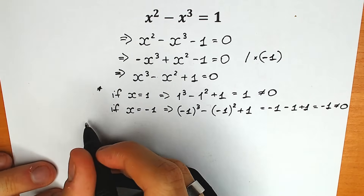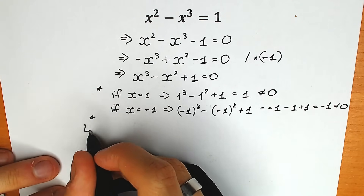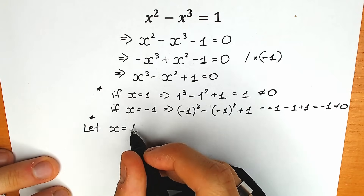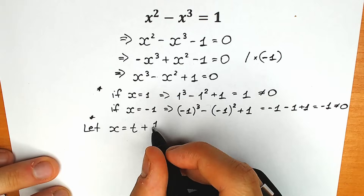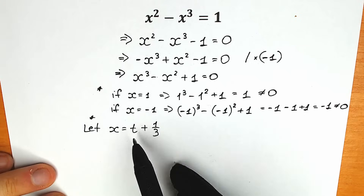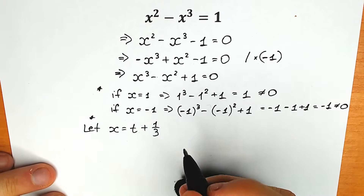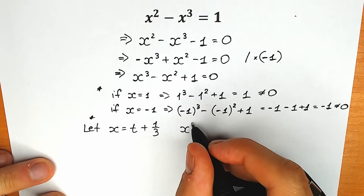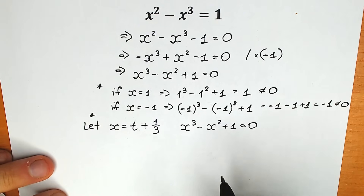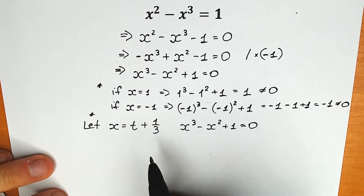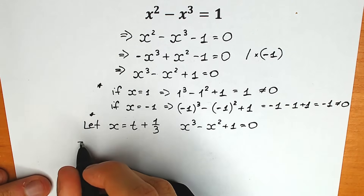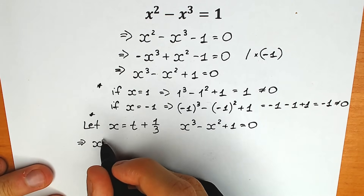I'm going to use a substitution. This is our second step. Let our substitution be x equal to t plus 1 third. Let's plug in t plus 1 third into our equation x cubed minus x squared plus 1 equal to 0. We can quickly find what x squared and x cubed are going to be equal to. So let's find x squared: x squared equals t plus 1 third raised to the second power.